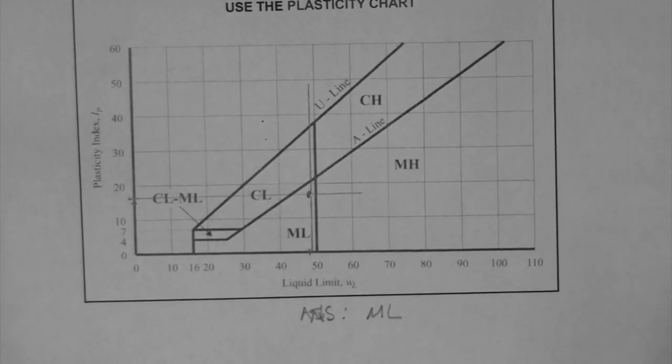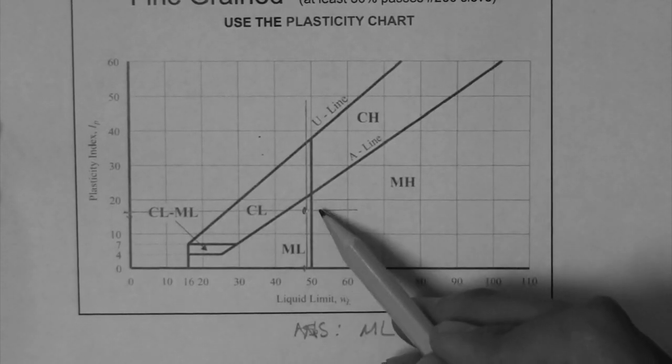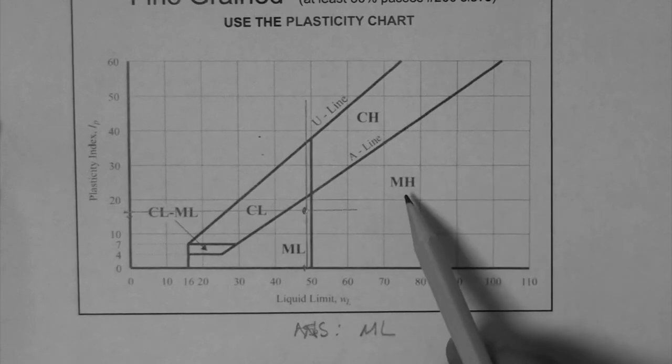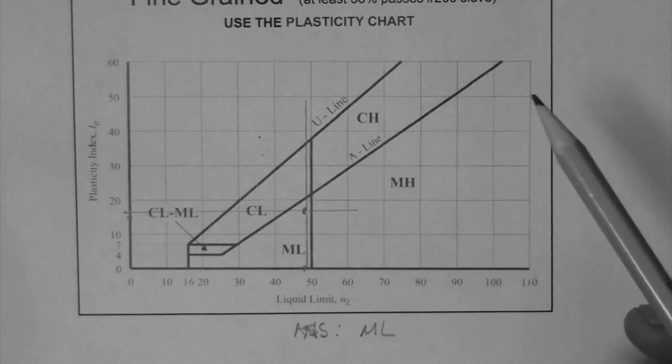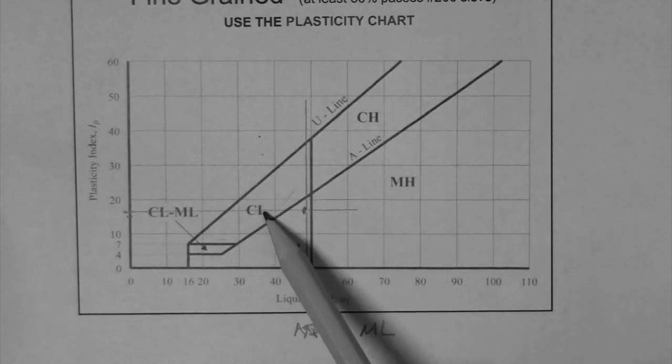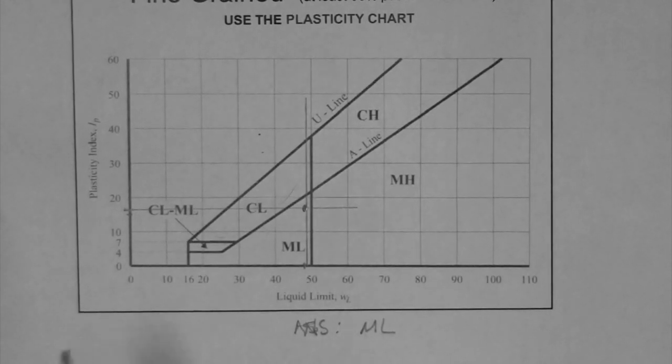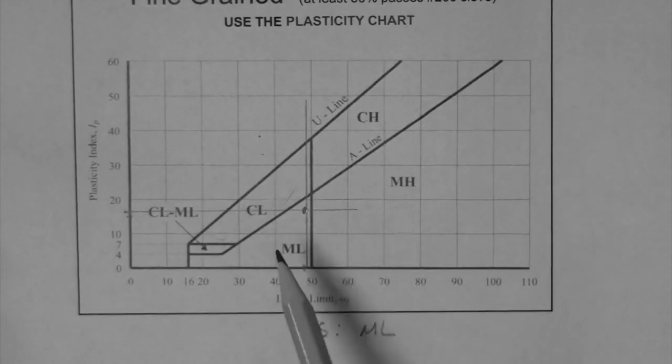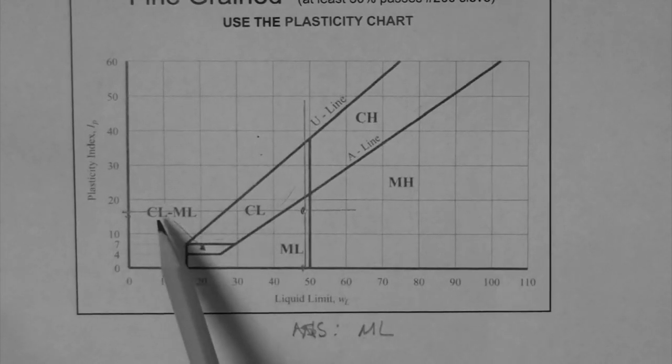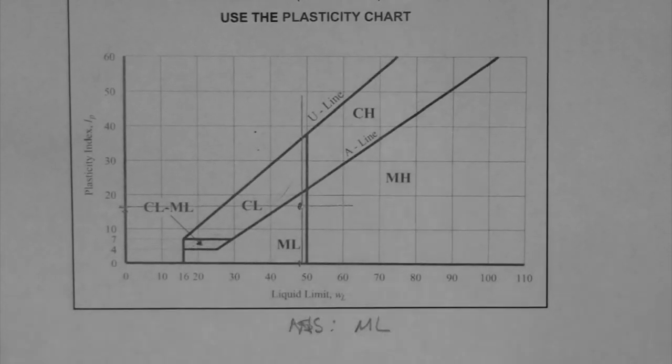Now, just for completeness here, if our soil point had landed somewhere over here, in this region, this would be a high plasticity silt. In this region here, high plasticity clay. In this region, low plasticity clay. And in this small little region here, it's called a CL-ML, which means that it is a soil that behaves somewhat in the middle, let's say, between CL and ML. Meaning that it has some CL-like properties and also some ML-like properties. That's this little region here.